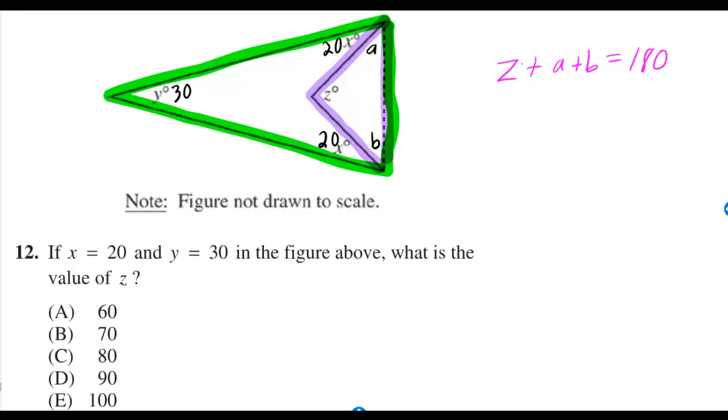For the small triangle we can write Z plus A plus B is equal to 180. For the big triangle we can write 30 plus 20 plus A plus 20 plus B is equal to 180.